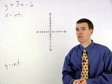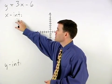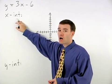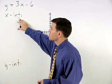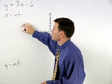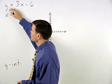Remember from the previous example that all x-intercepts have a y-coordinate of 0. So to find the x-intercept of our line, we simply plug a 0 in for y.